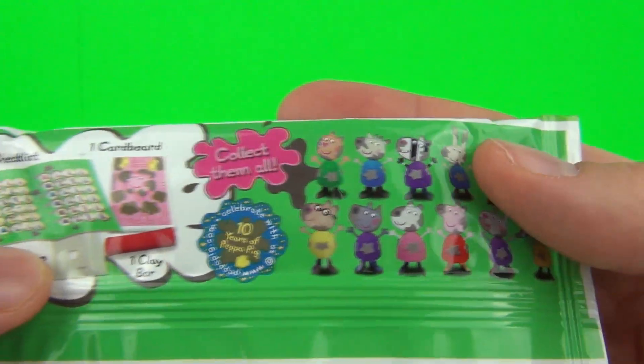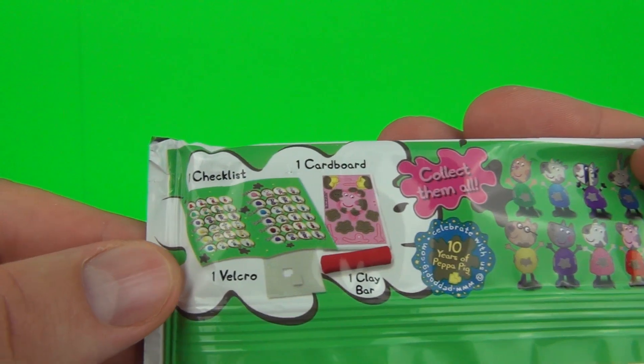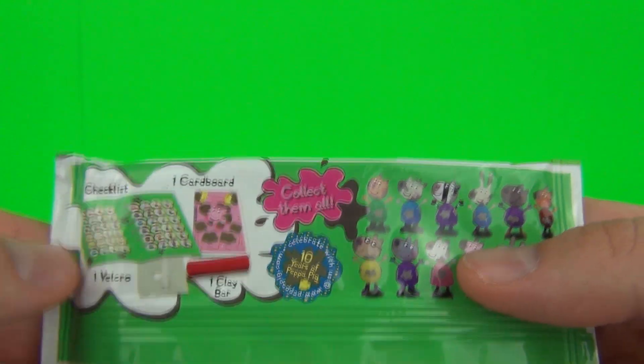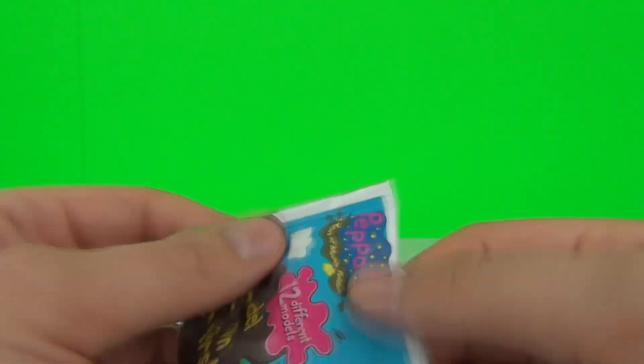There are the characters you can collect. We get a checklist inside, some velcro, the clay, and we get the cardboard inside as well.